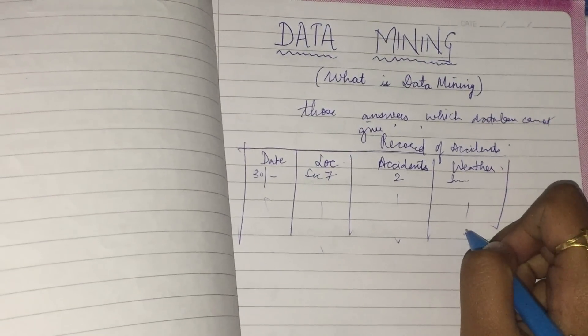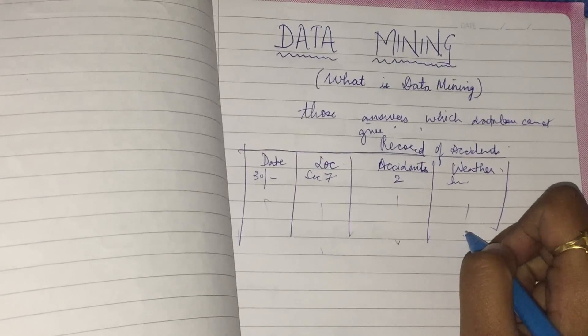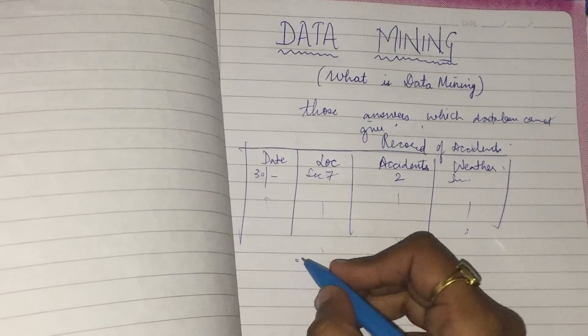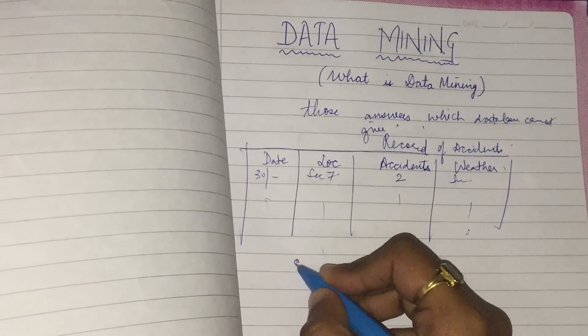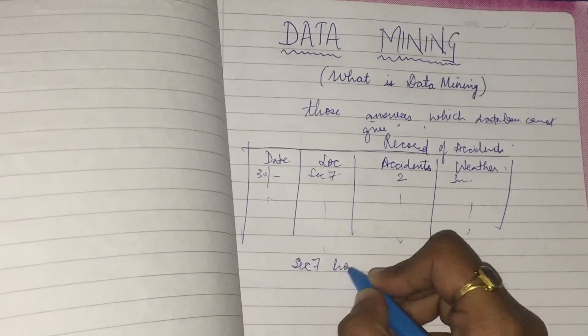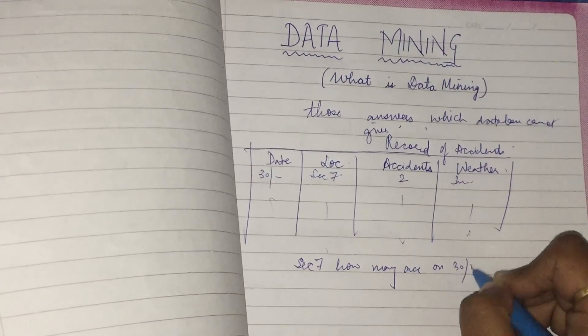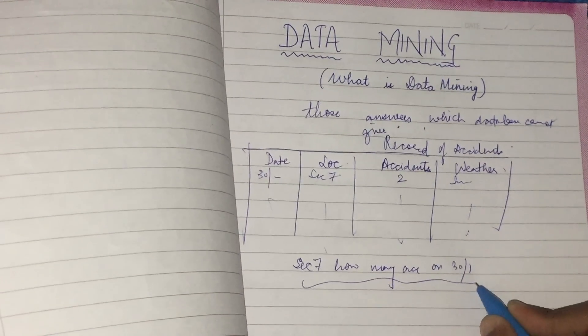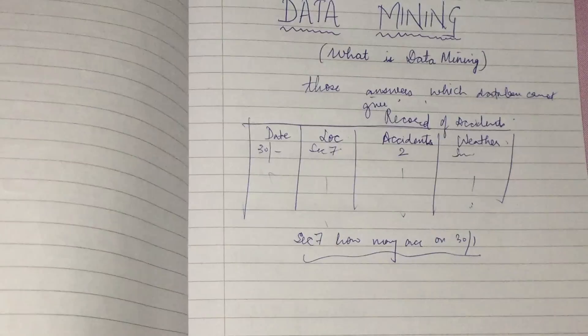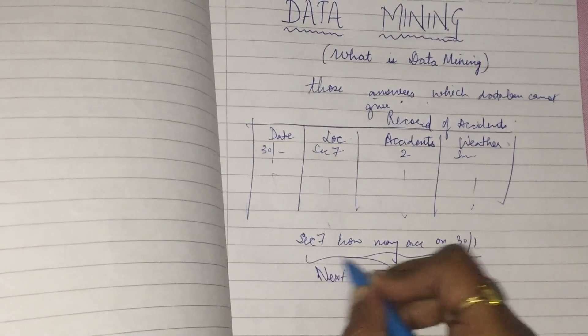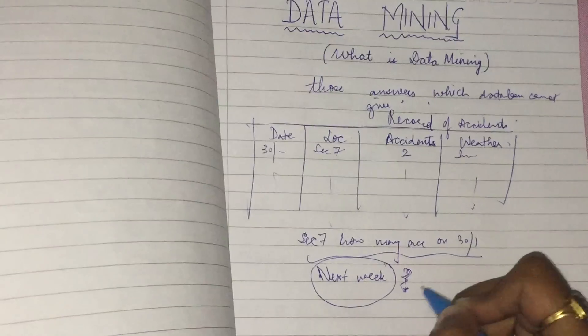Suppose I want a record at sector 7, how many accidents on 30th of Jan. I will definitely get this answer from database. But now if I want an answer to tell me the accidents that will take place next week, this cannot be predicted by database.